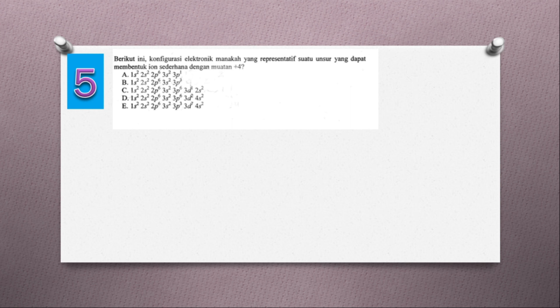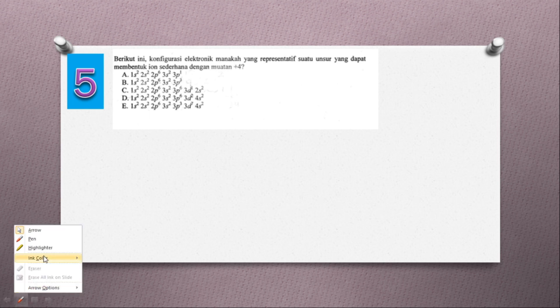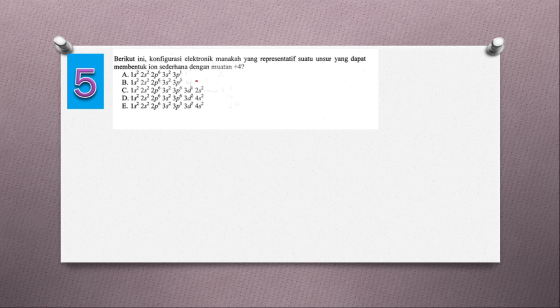Jadi ini mudah sekali. Di sini ada 5 option, ada 5 konfigurasi elektron. Kita diminta untuk menentukan dari kelima ini mana yang akan membentuk ion sederhana dengan muatan plus 4.